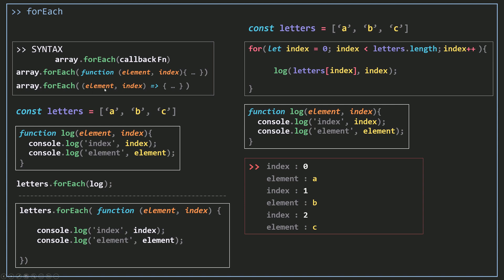Your inline function can also be an arrow function — always the element is the first parameter and the index is the second. Remember, you can name these parameters whatever you want: you can call them E and I, or idx as most developers use for the index, and so on.